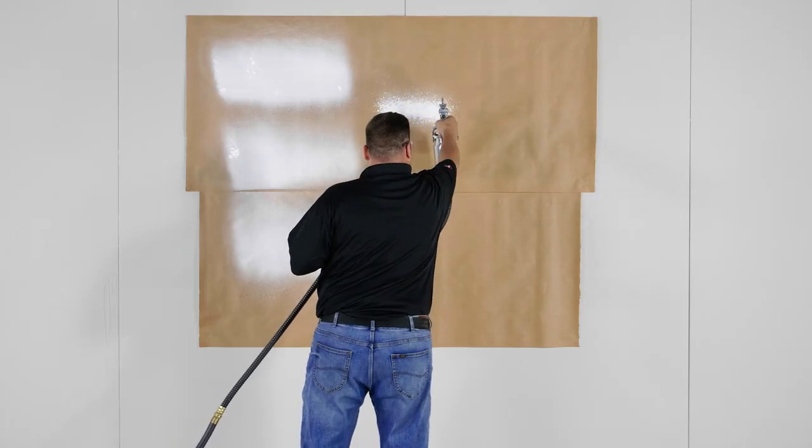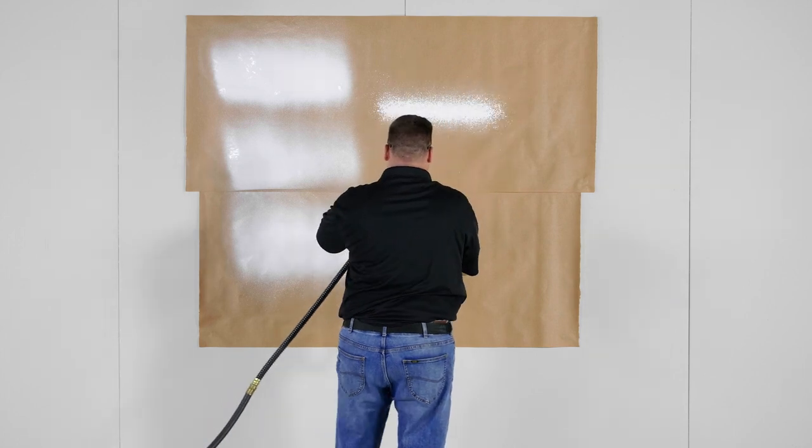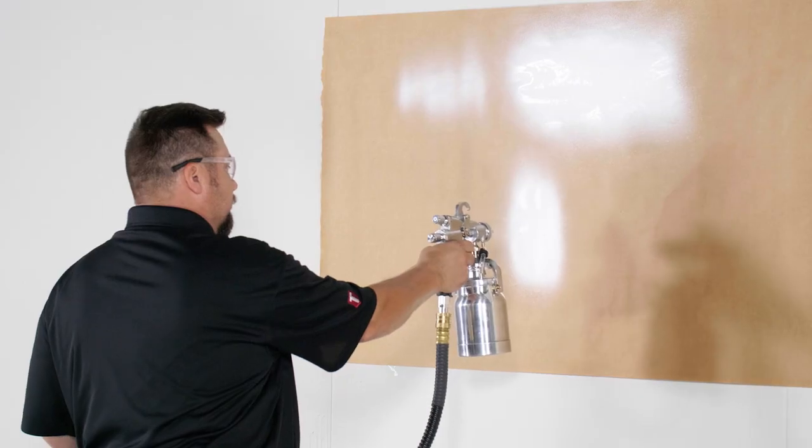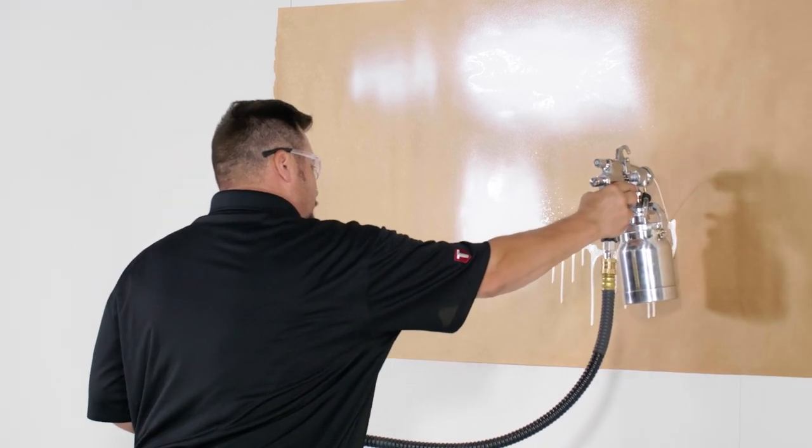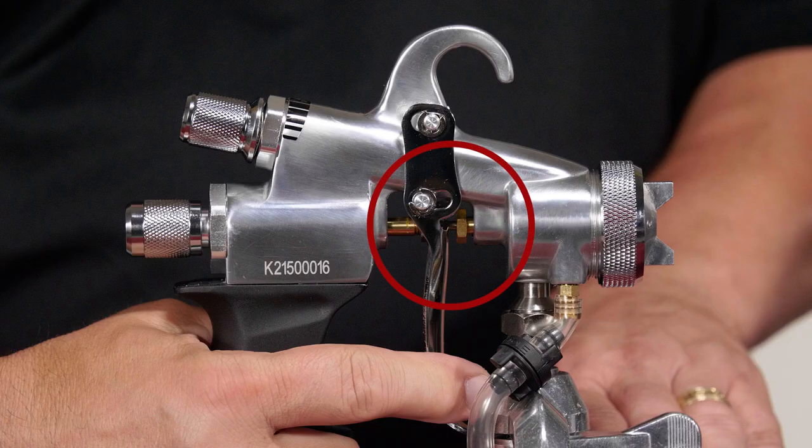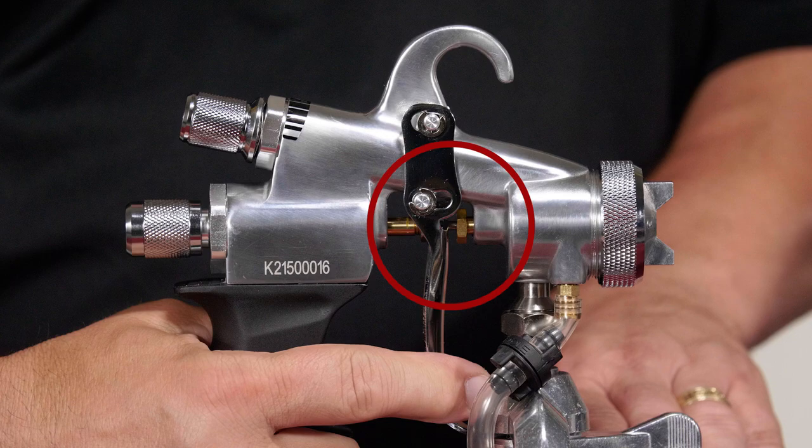If you experience a pattern which is split between good and bad sections, your air cap is likely clogged. If you experience fluid streaming after the trigger is released, you either have material buildup in the nozzle, or you over-tightened the needle seal nut when changing it.